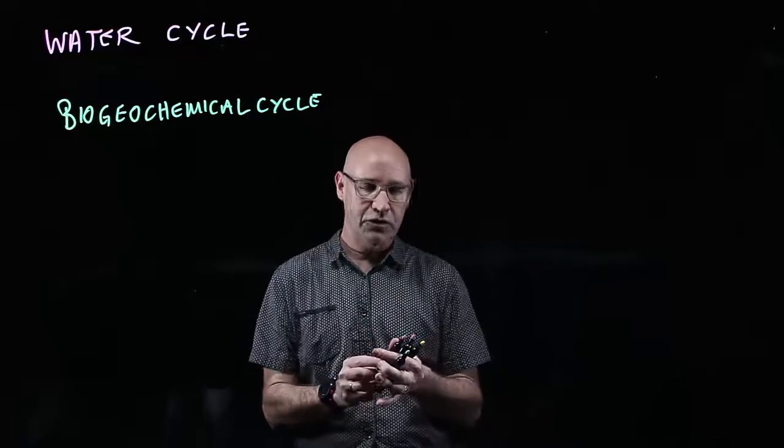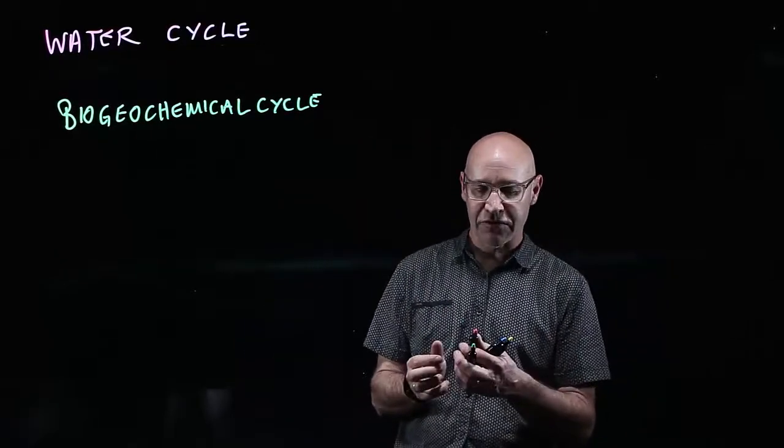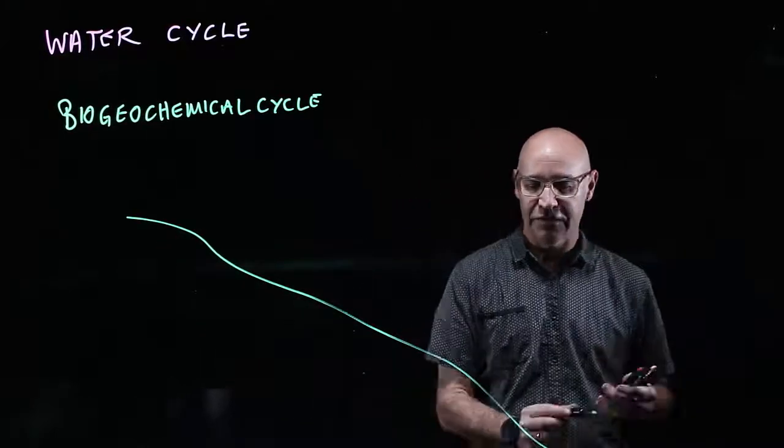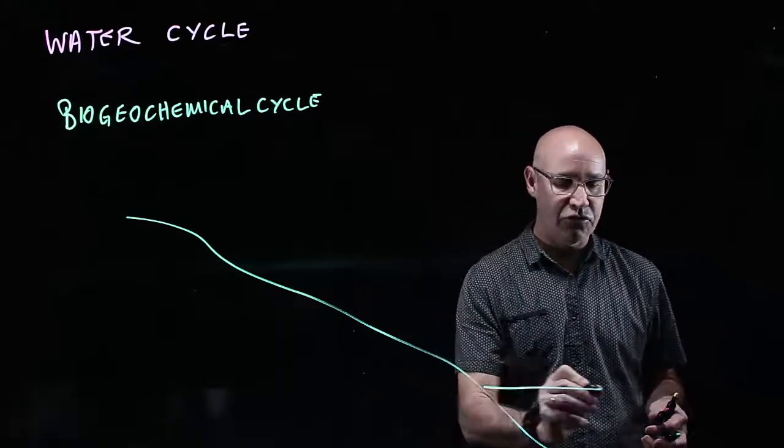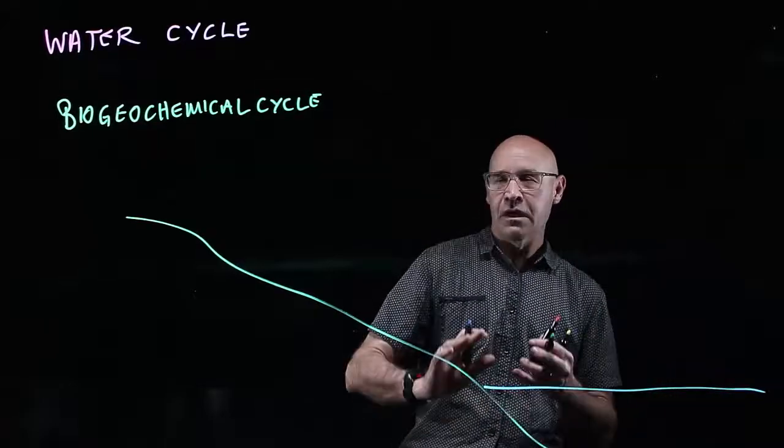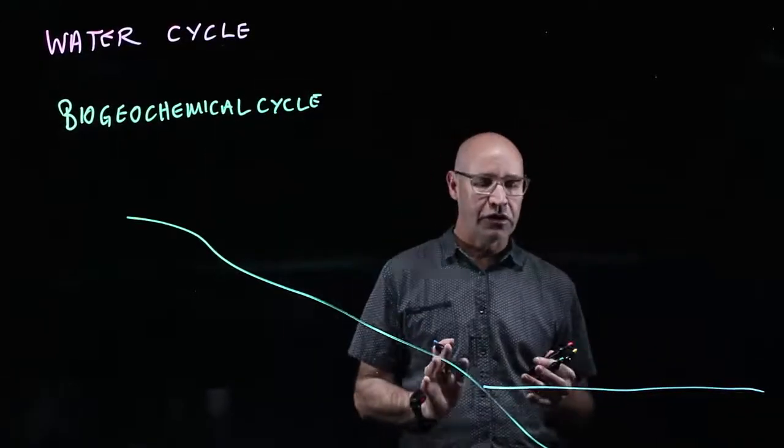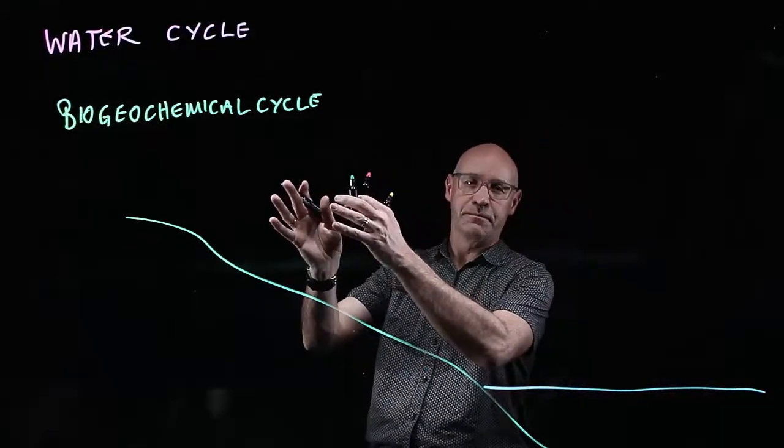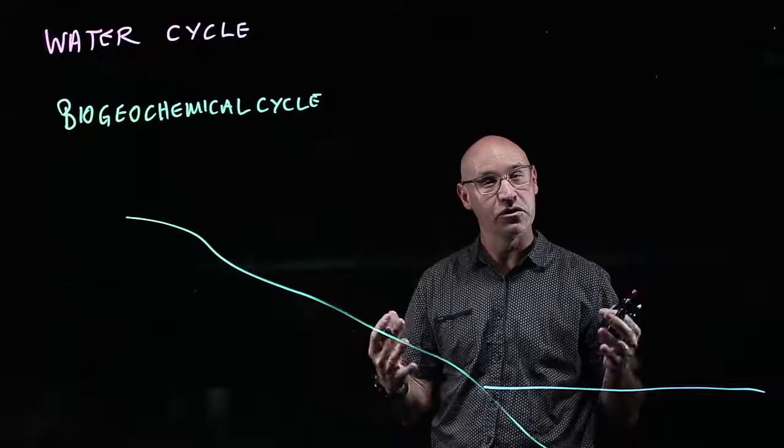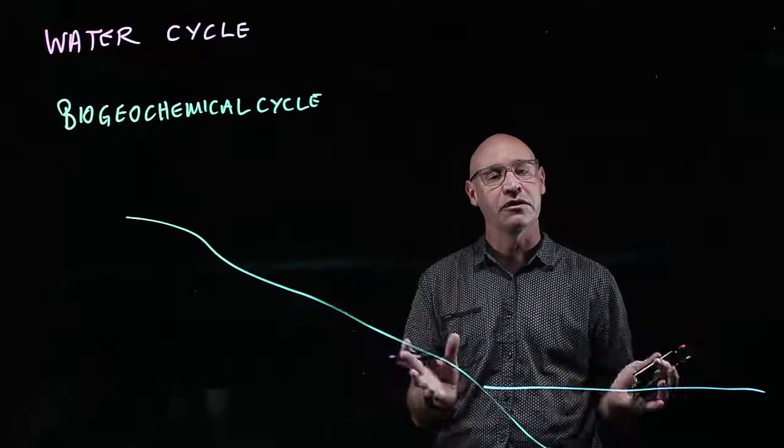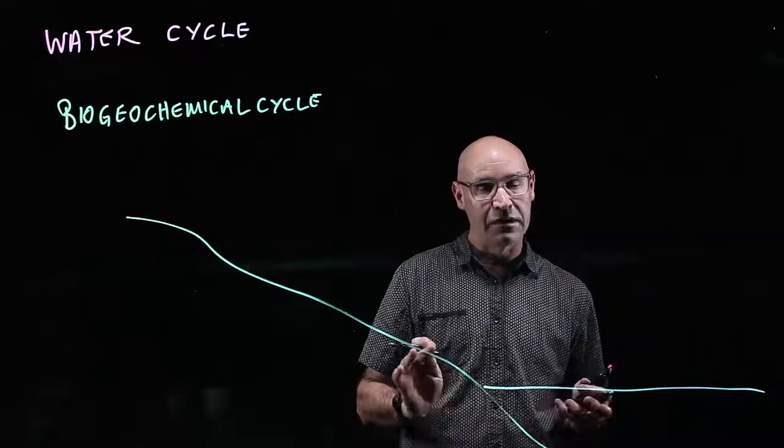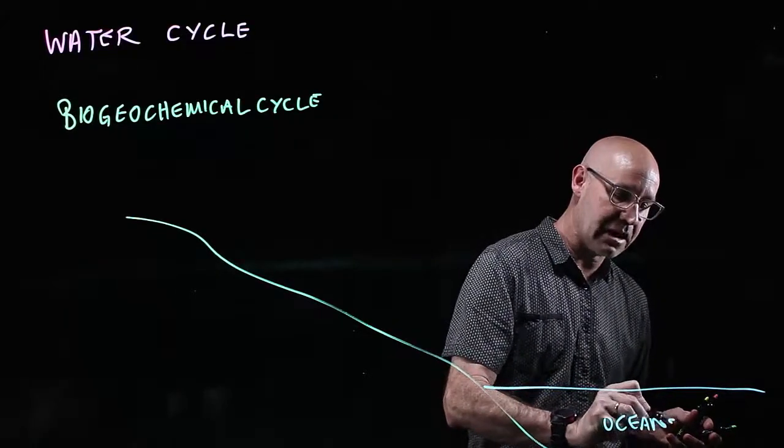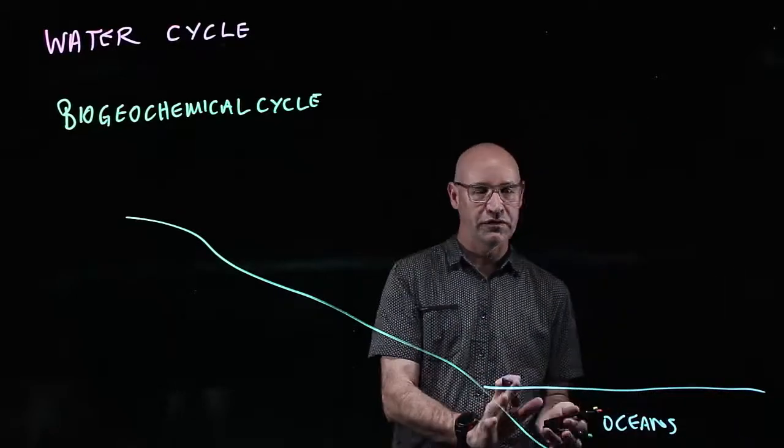The first one we're going to talk about is the water cycle. I'm picking that one first because that's the one I'm sure you know most about. Let's do the water cycle. When we talk about biogeochemical cycles, we talk about the fact that there's reservoirs where the chemical or the substance, the molecule, spends most of its time. And water, the reservoir for water, is in the oceans. So a large amount of water is in the oceans.